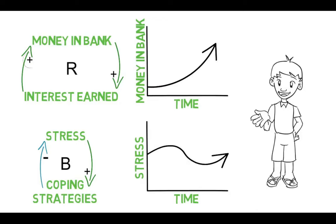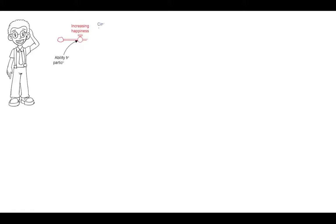A plus sign indicates that both elements change in the same direction, or that the first element adds to the next. In this case, the stress goes up, so the coping strategies go up. A minus sign indicates that the elements change in opposite directions, or that the first element subtracts from the next — in this case, coping strategies go up, so the stress goes down. Identifying loops in isolation can be difficult. Finding them within other diagrams, such as stock flow maps, is a good way to get started.